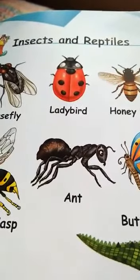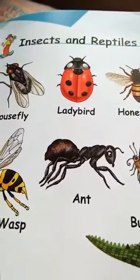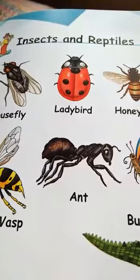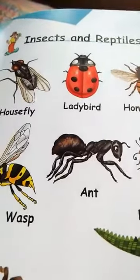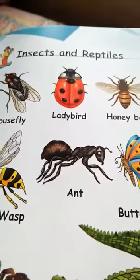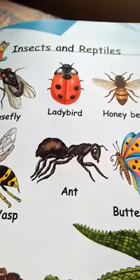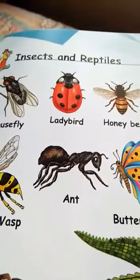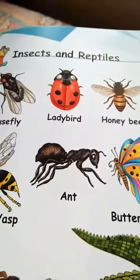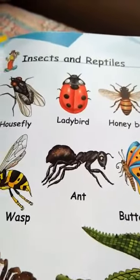Hello dear students. This is chapter number 19: Insects and Reptiles. Insects are small animals. They have six legs. Some insects have wings, and these insects can fly.